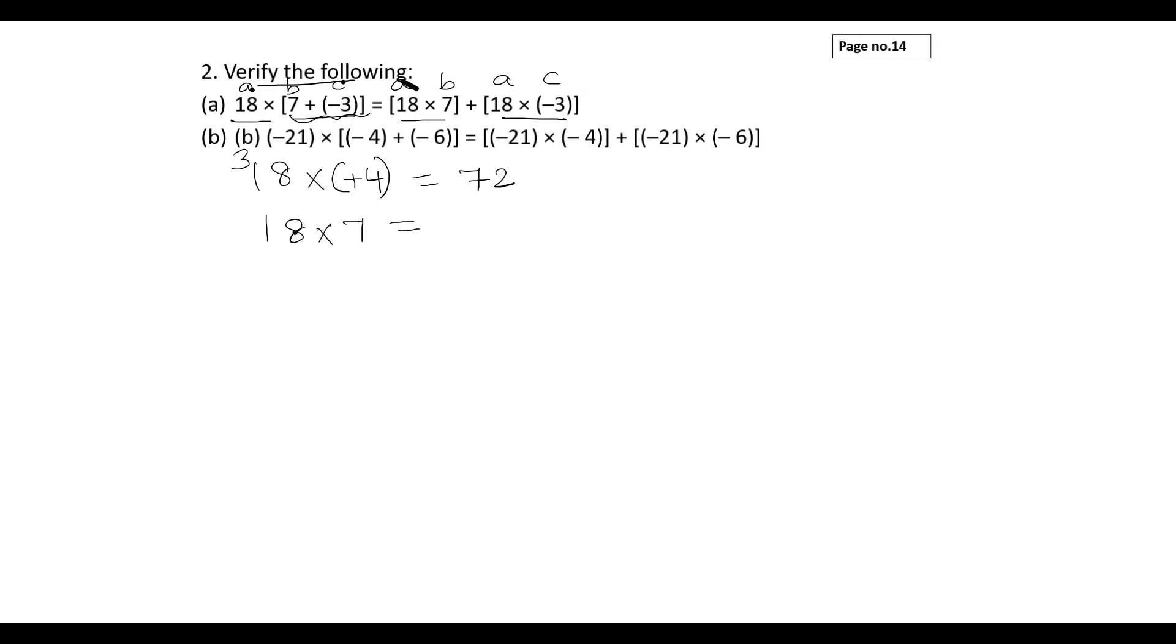On the other hand side, 18 × 7 is 126, and 18 × (-3) is -54. If you add these two numbers you will get 72. So right-hand side equals left-hand side, and the property is proved.